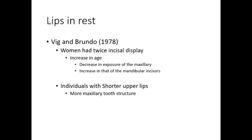Regarding lips in repose, in 1978, Vig and Brundo's data showed women had twice the incisal display of men. In addition, an increase in range resulted in a decrease in exposure of maxillary incisors and an increase in that of the mandibular incisors. Individuals with shorter upper lips revealed more maxillary tooth structure than those with longer upper lips.